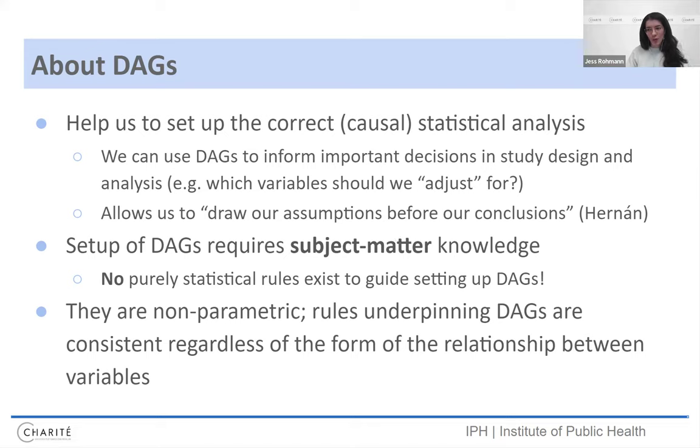You do need subject matter knowledge to draw a DAG. There's no purely statistical rule that can guide you setting up DAGs, though there is a lot of work now in causal discovery about learning certain patterns, not just patterns, but actually causal relationships between variables. But I'm going to stick with a simple example now and say that in general, we don't use statistical rules to guide our setup of DAGs. And DAGs are non-parametric, and the rules that underpin DAGs are consistent, regardless of the form of the relationship between the variables. So if something would have a quadratic relationship, that doesn't matter in the DAG, it's non-parametric. As long as there's a cause-effect relationship between variables, you can depict the arrow and the DAG.